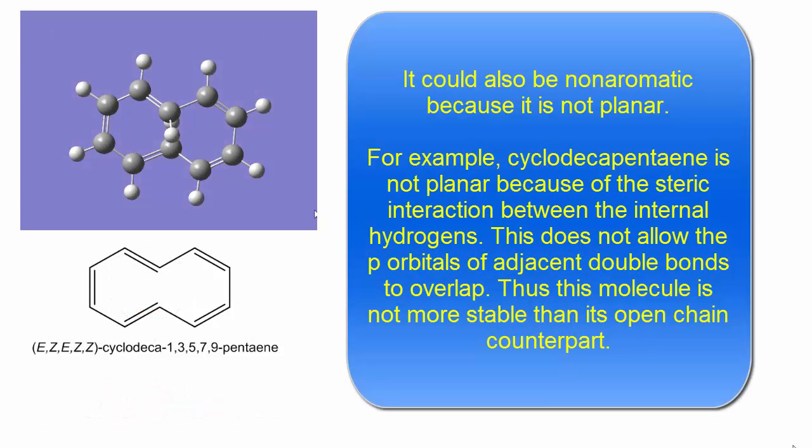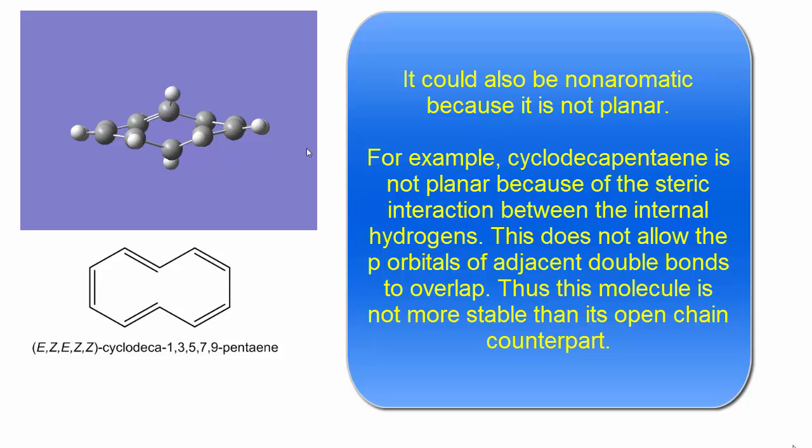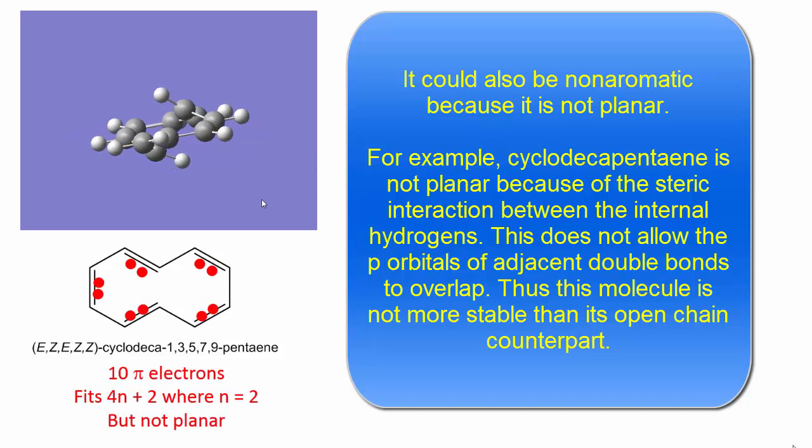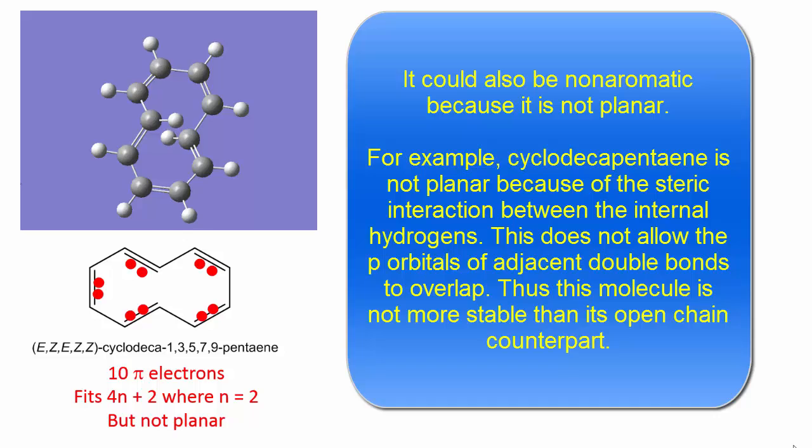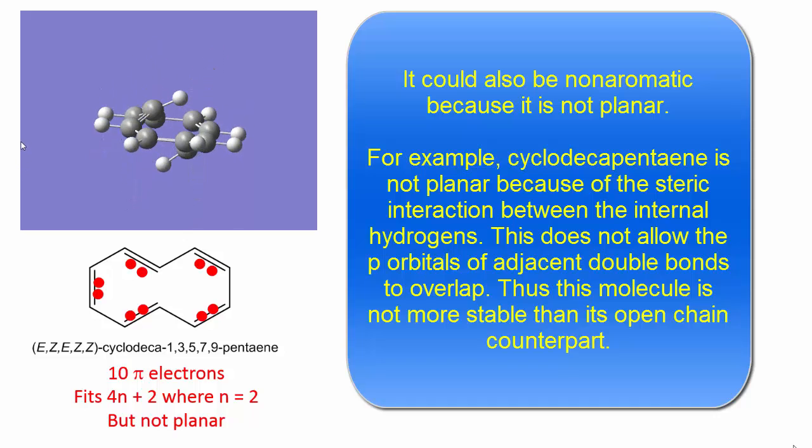It could also be non-aromatic because it is not planar. For example, cyclodecapentaene is not planar because of the steric interaction between the internal hydrogens. This does not allow the p orbitals of adjacent double bonds to overlap. Thus this molecule is not more stable than its open chain counterpart.